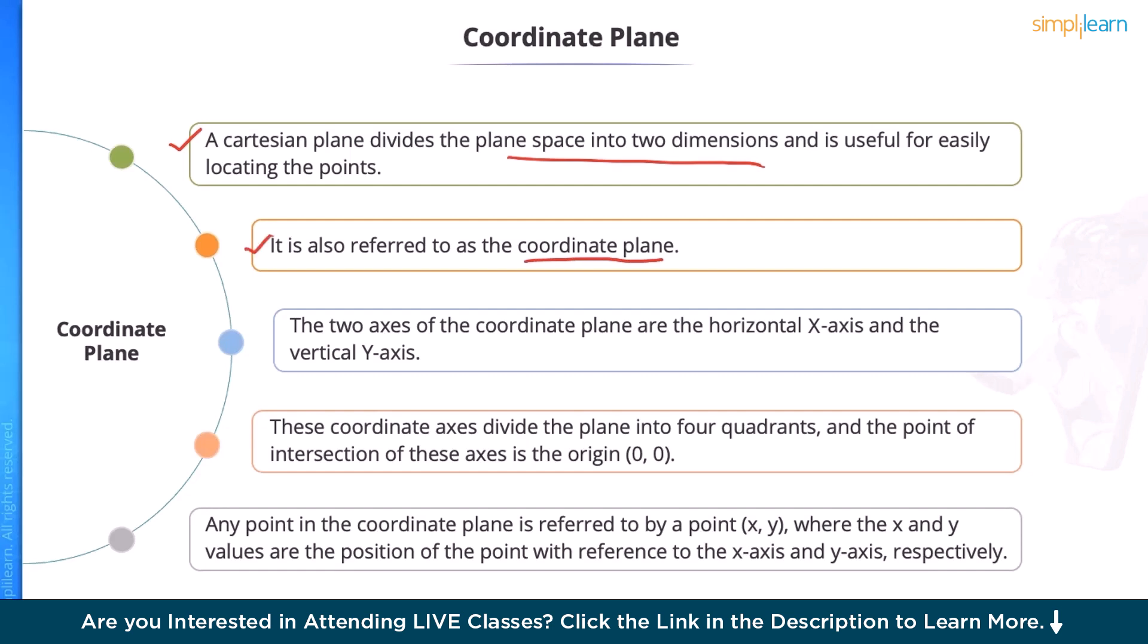The two axes of the coordinate plane are horizontal x-axis and vertical y-axis. These coordinate axes divide the plane into four quadrants and the point of intersection of these axes is the origin (0, 0).